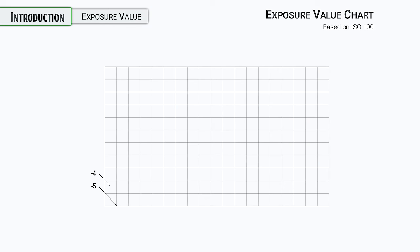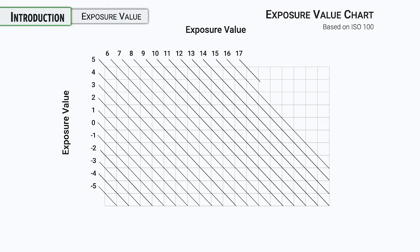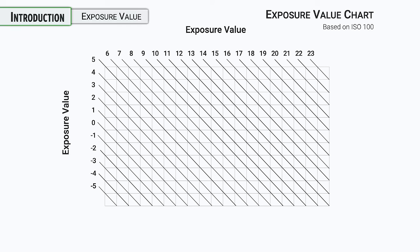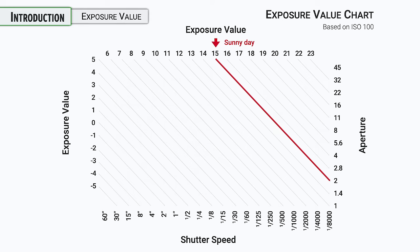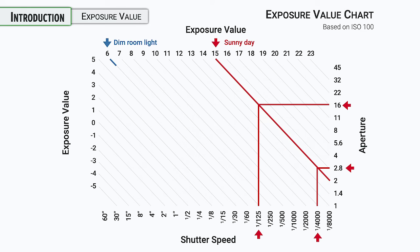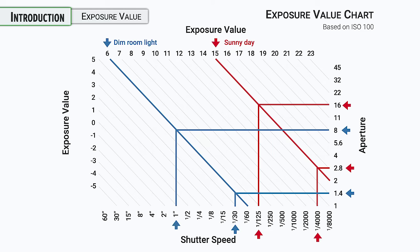Another common chart style has exposure value starting on the left stretching across the top, with apertures on the right-hand side and shutter speeds along the bottom. At EV 15 on a sunny day, that matches up with F16 at 1/125th of a second. A fast shutter speed like 1/4000th needs a 2.8 lens. In a dim room at EV 6, 1/30th of a second gives you F1.4, while F8 gives you a one-second exposure.